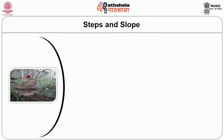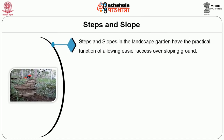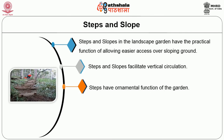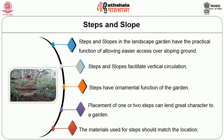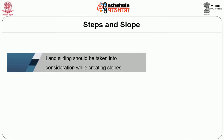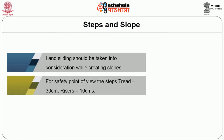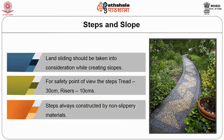Then we will see about steps and slopes. Steps and slopes in the landscape garden have the practical function of allowing easier access over sloping ground and facilitate vertical circulation. Steps have an ornamental function in the garden. Placement of one or two steps can lend great character to a garden. The material used for steps should match the location. Landsliding should be taken into consideration while creating slopes. For safety, the step tread should be 30 cm and the rise should be 10 cm. Steps should be constructed from non-slippery material. Nowadays flagstones are used for constructing steps; pebbles are also used for sidewalks.